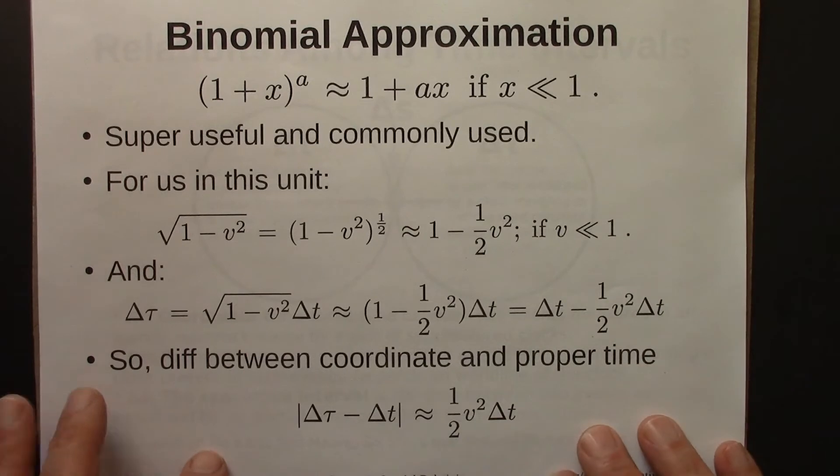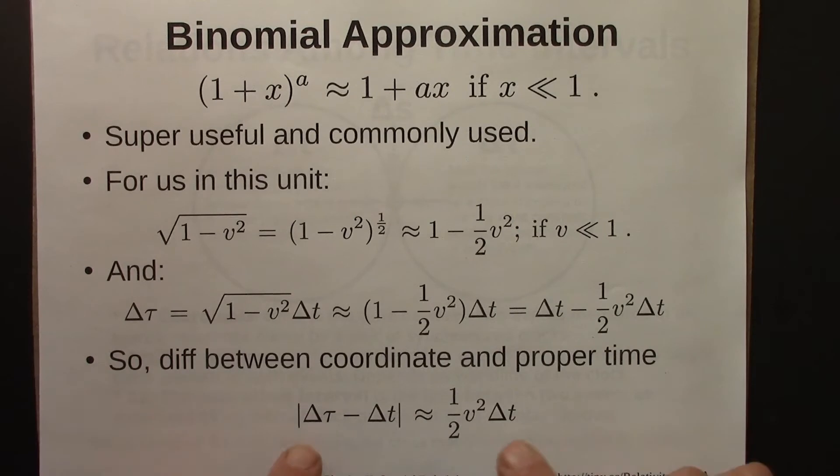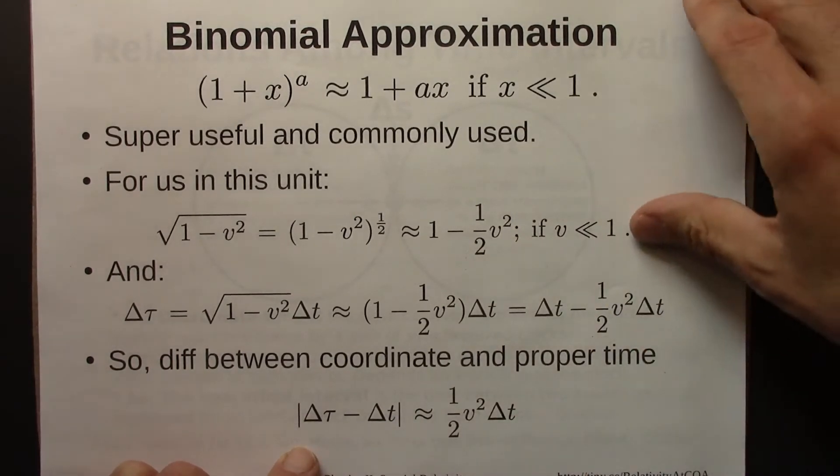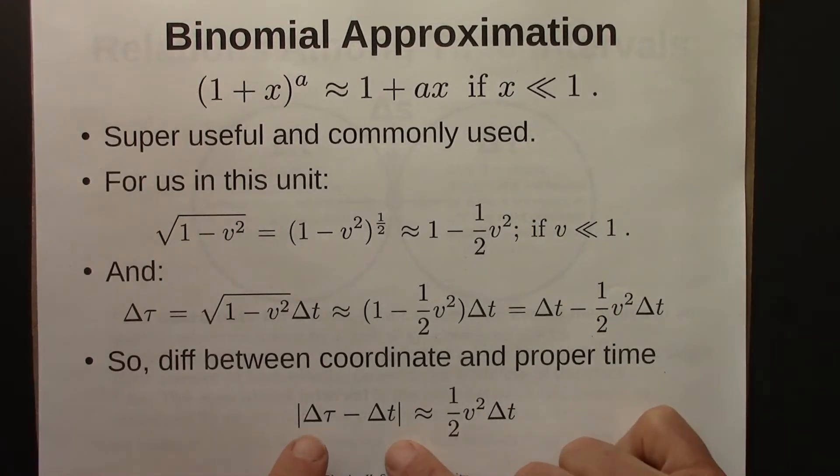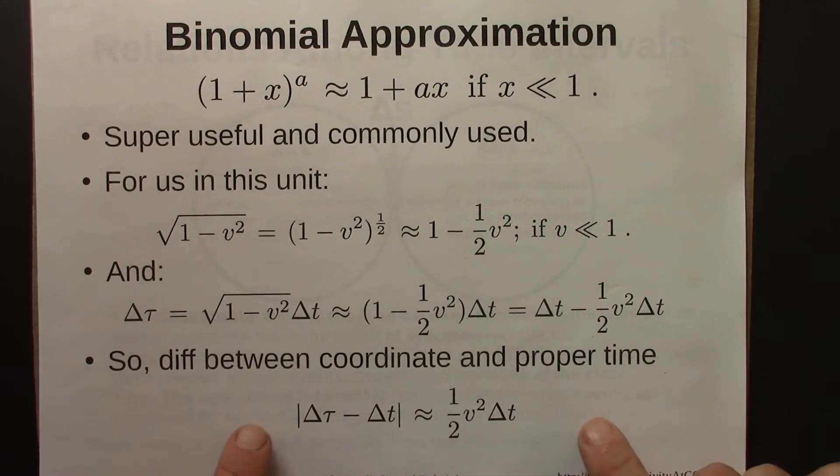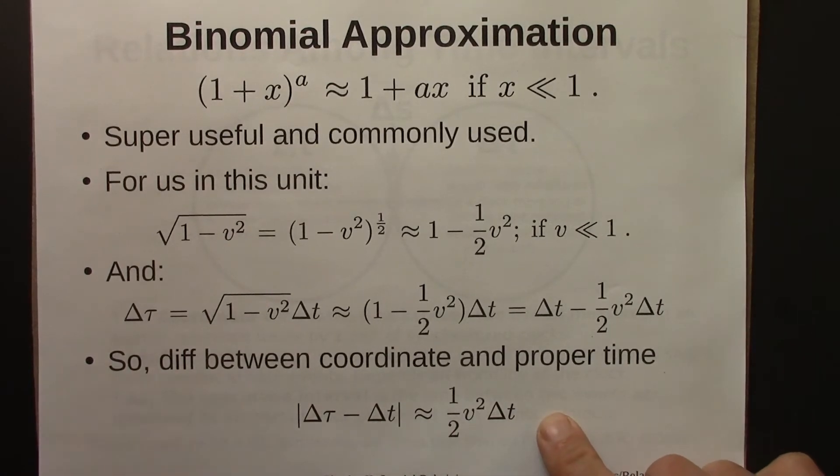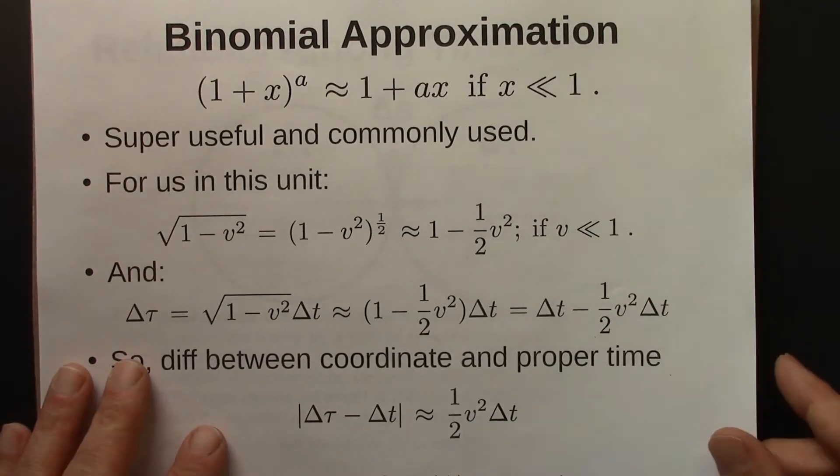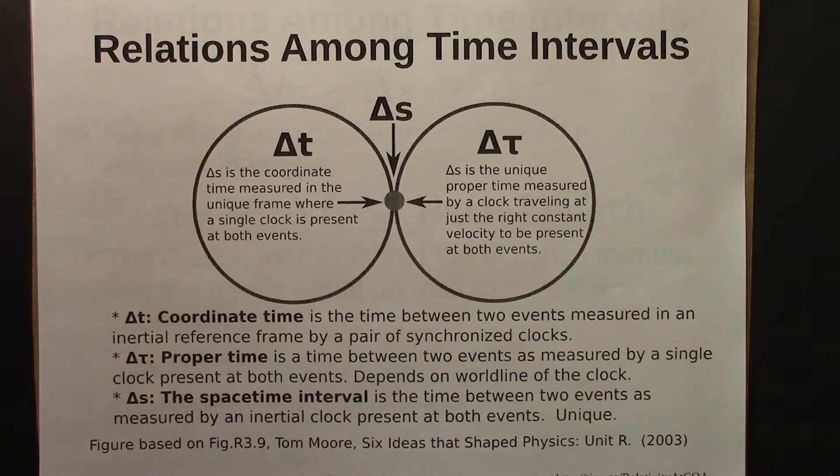So what this says is the difference between a coordinate time and a proper time is, if v is small, roughly equal to half v squared delta t. And if you try to calculate delta tau and delta t separately on your calculator, those numbers will be so similar that you might not even be able to notice the difference. But if you calculate the difference directly using this formula, you'll be able to get the answer without having to fight with your calculator.